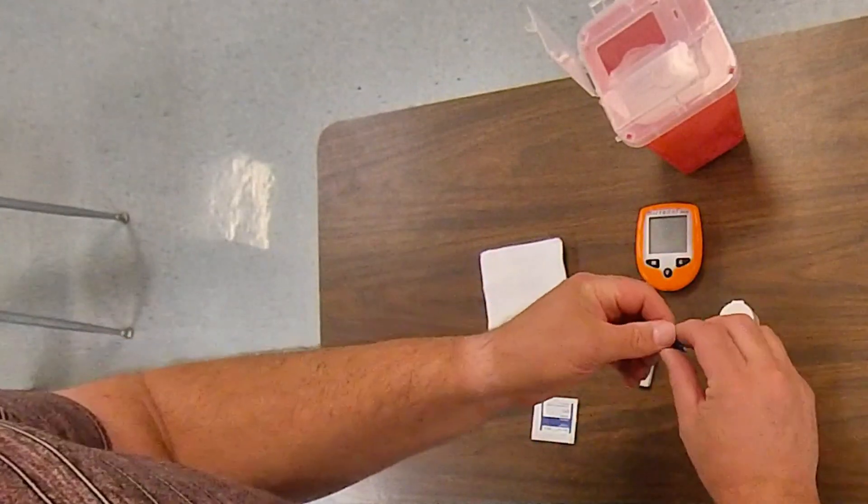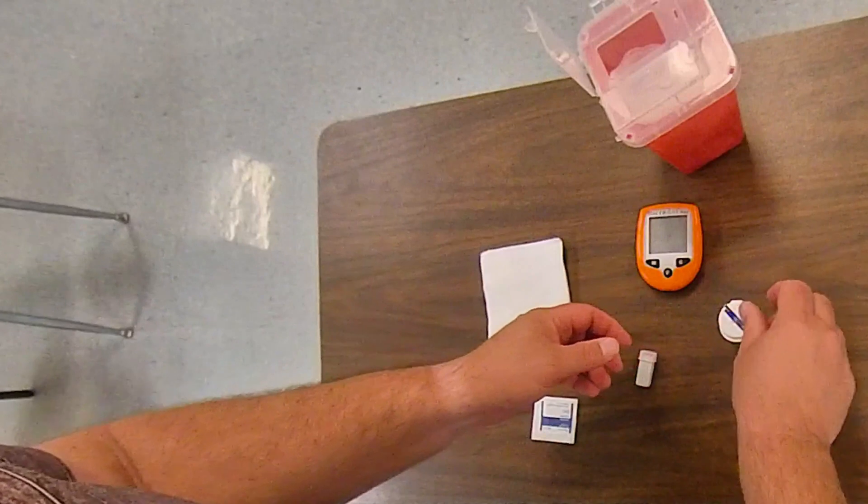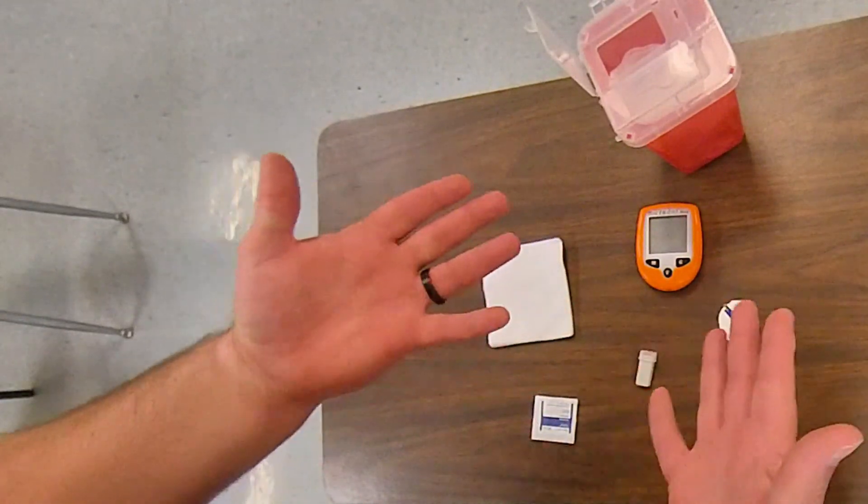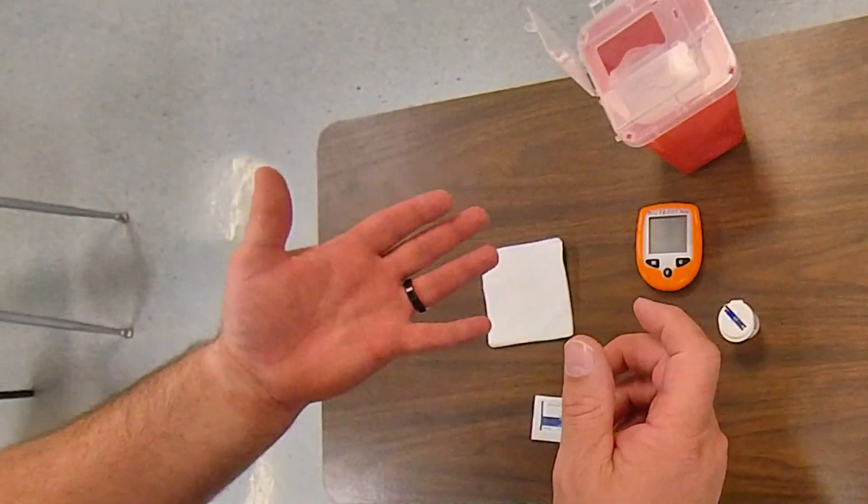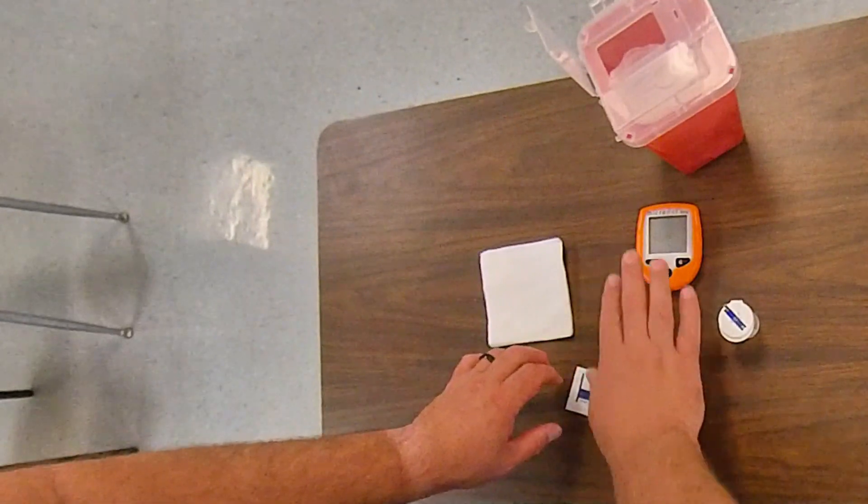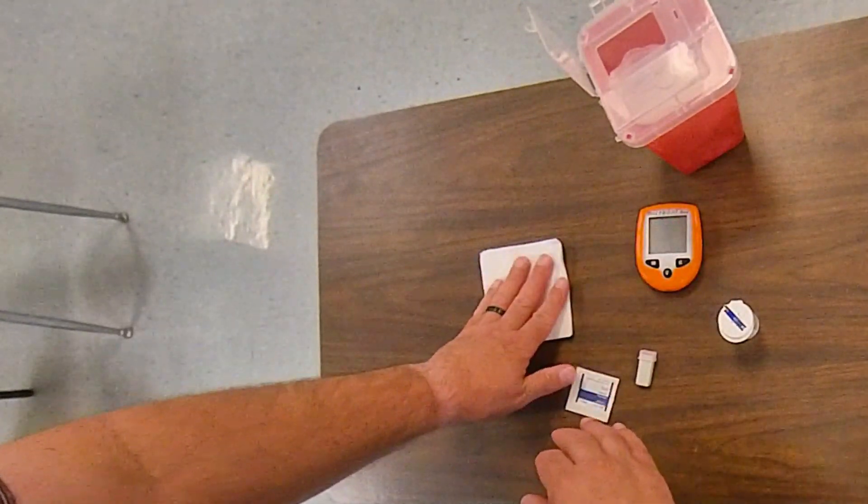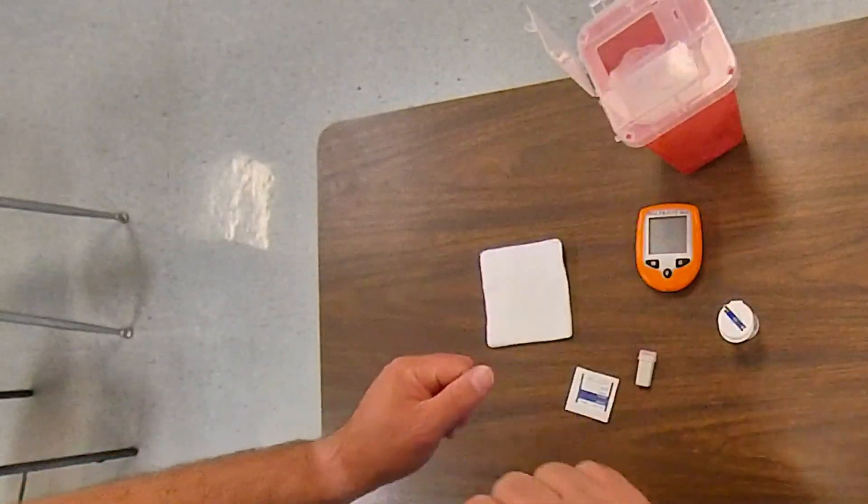Now, I would put on gloves when I'm dealing with a patient, but I'm doing this to myself so I can't wear gloves and check a blood sugar. I have my lancet, 4x4s, some people will have a bandaid out and I need a sharps container.